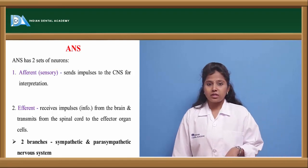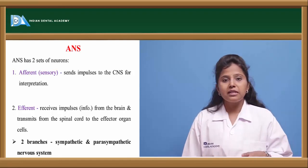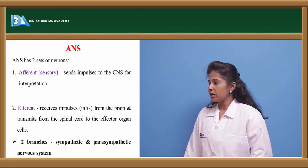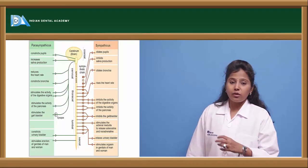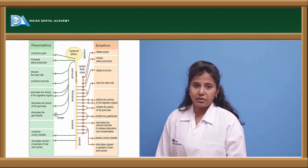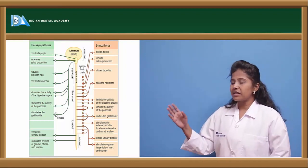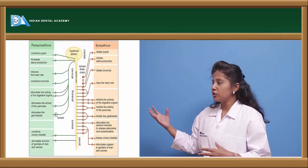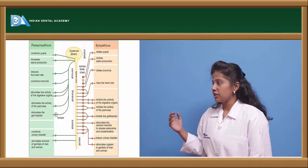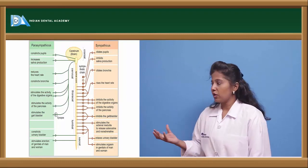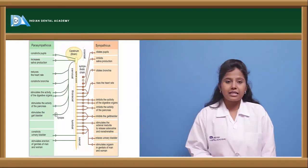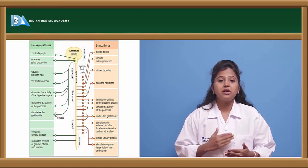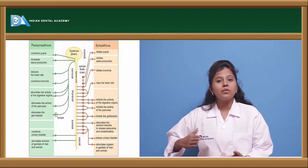The autonomic nervous system has two branches: the sympathetic nervous system and the parasympathetic nervous system. There are various effects of sympathetic activation. On sympathetic activation, it causes dilation of the pupils, inhibition of saliva production, dilation of bronchial muscles, inhibition of the gallbladder, and relaxation of the urinary bladder. The effects differ from organ to organ.